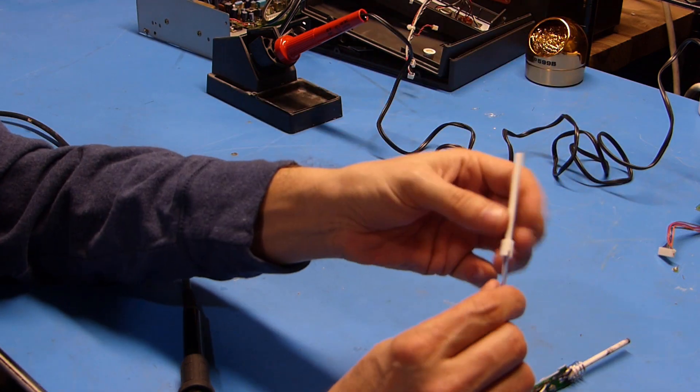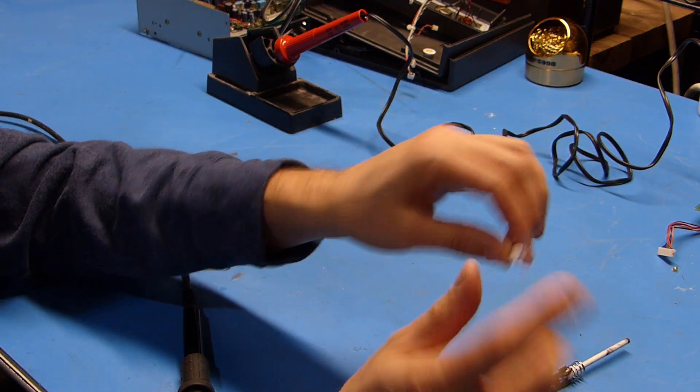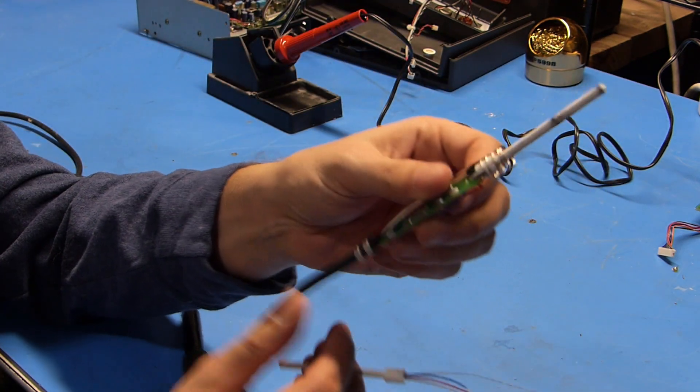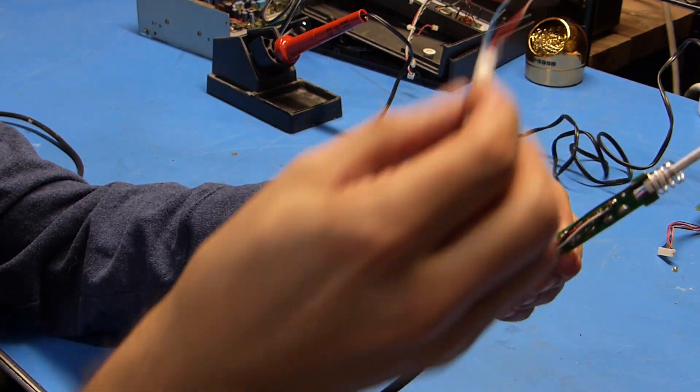When I bought the soldering station it did come with one replacement heating element which is what this is and you can see it's got a pigtail with four wires on it. Basically what we're going to need to do is desolder the four wires from this one and solder this one in its place.